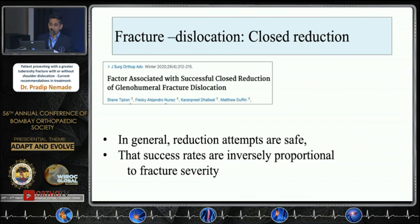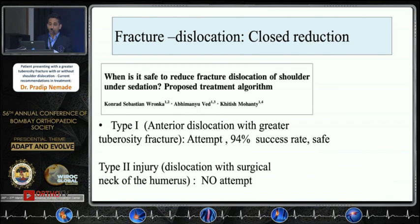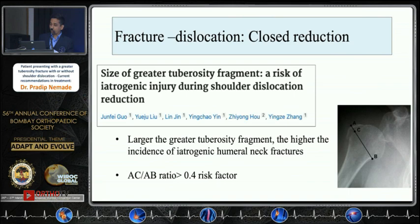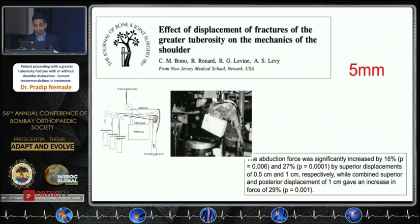When a patient presents with dislocation, should we attempt closed reduction? Articles show that reduction attempts are safe, but success rates are inversely proportional to fracture severity. One article states that in fracture-dislocation with greater tuberosity involvement, a closed reduction can still be attempted with a 94% success rate, but if it involves the surgical neck, reduction should not be attempted. Another article shows that if the fragment-to-acromion ratio is more than 0.4, there is a risk of iatrogenic fractures.